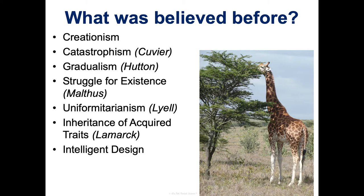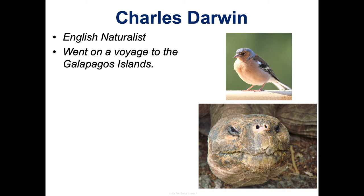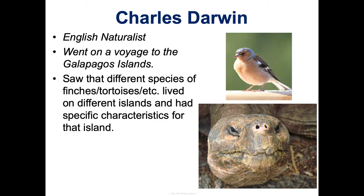Intelligent design is similar to creationism but doesn't use the label of God — it basically says that things are too complex to have happened by chance and there must be some sort of intelligent designer. These are the different theories that existed before Darwin. Remember, he did not come up with evolution — his scientific studies came up with a mechanism to explain how evolution occurs. He was a naturalist who went on a voyage to the Galapagos Islands, and we have a great story we're going to read about him in class.